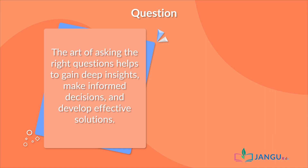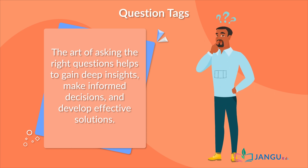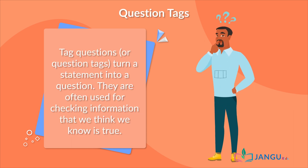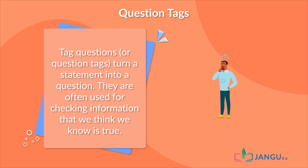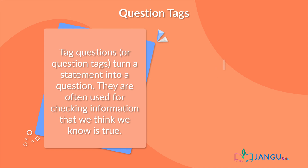Now that we have learned what questions are, let us move on to question tags. Tag questions or question tags turn a statement into a question. They are often used for checking information that we think we know is true. Tag questions are made using auxiliary verbs — be or have — and a subject pronoun such as I, you, or she.